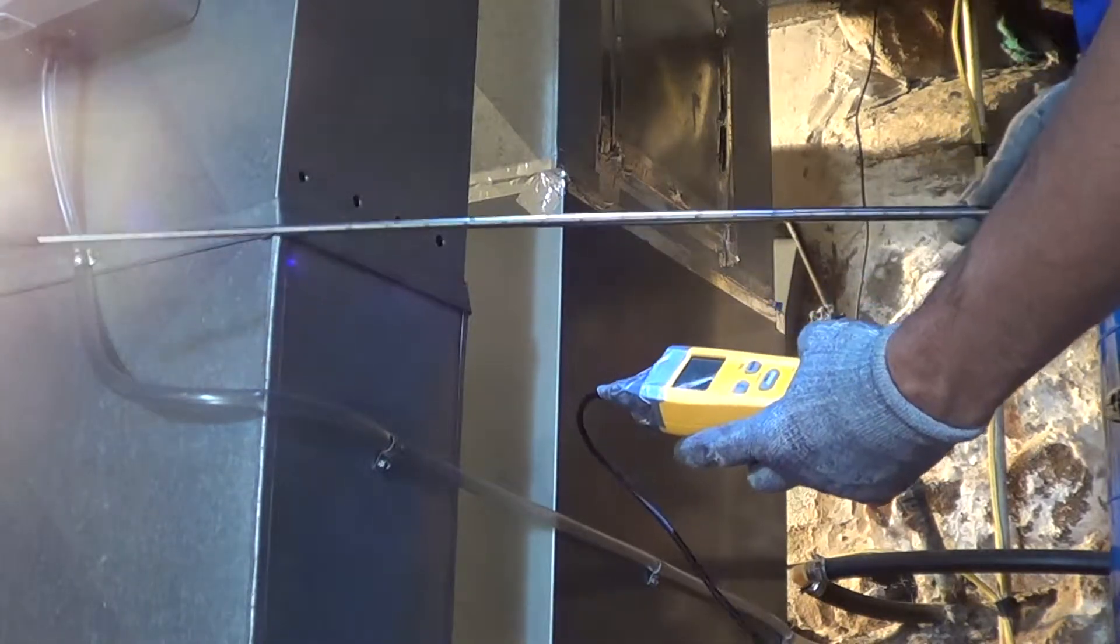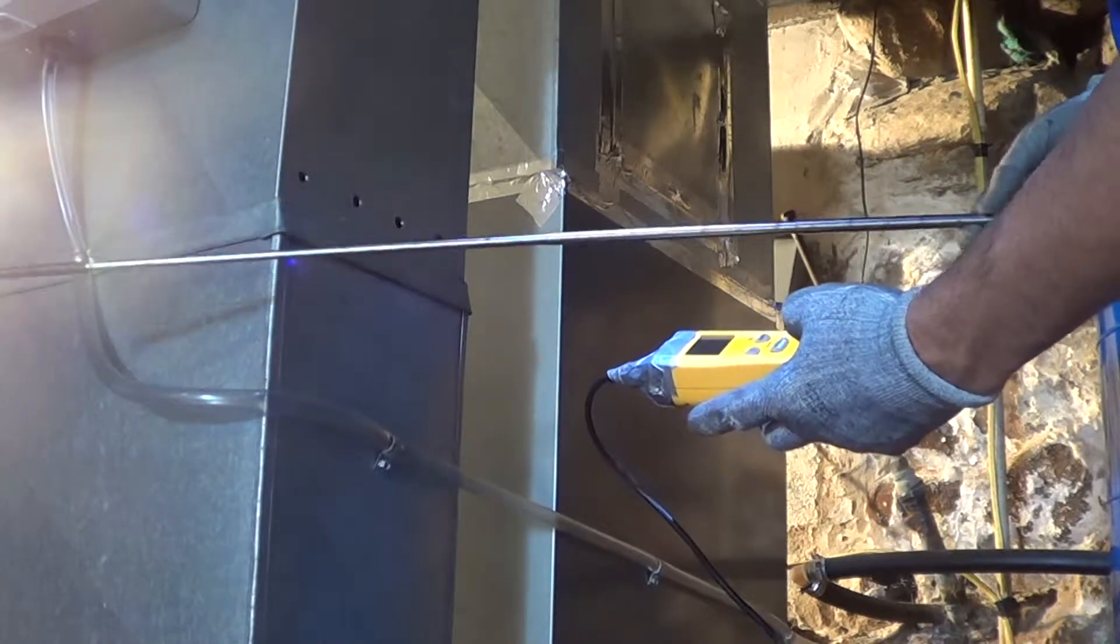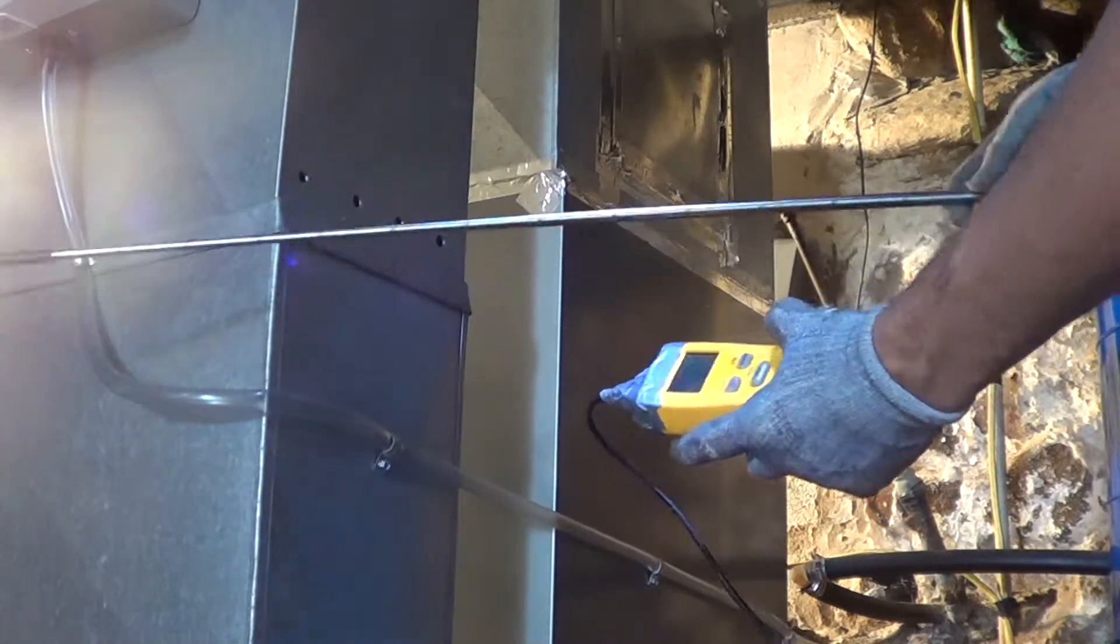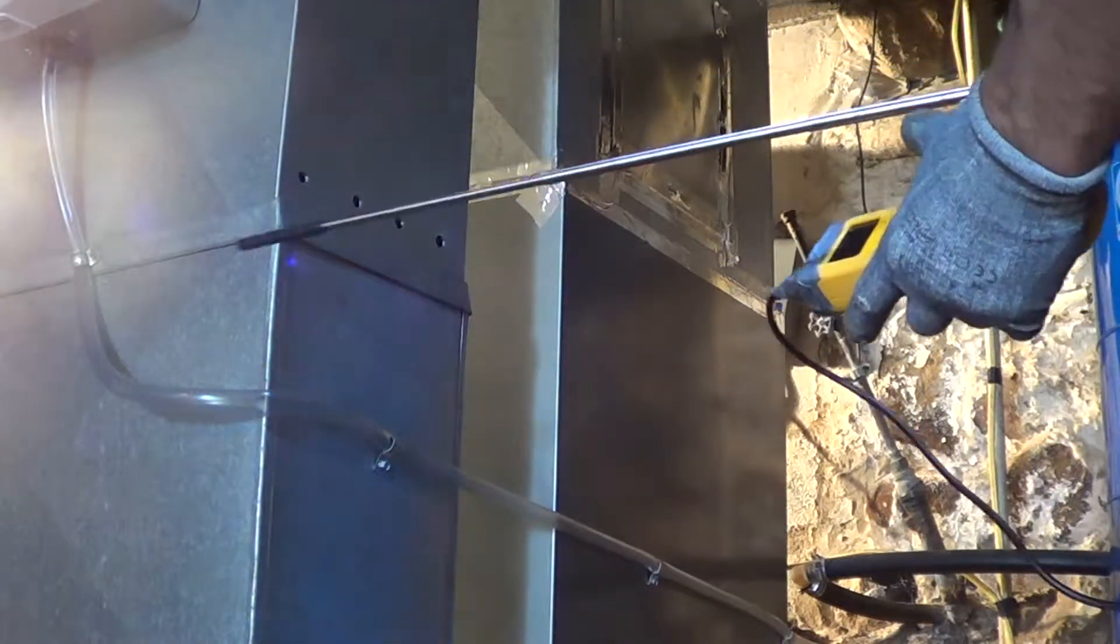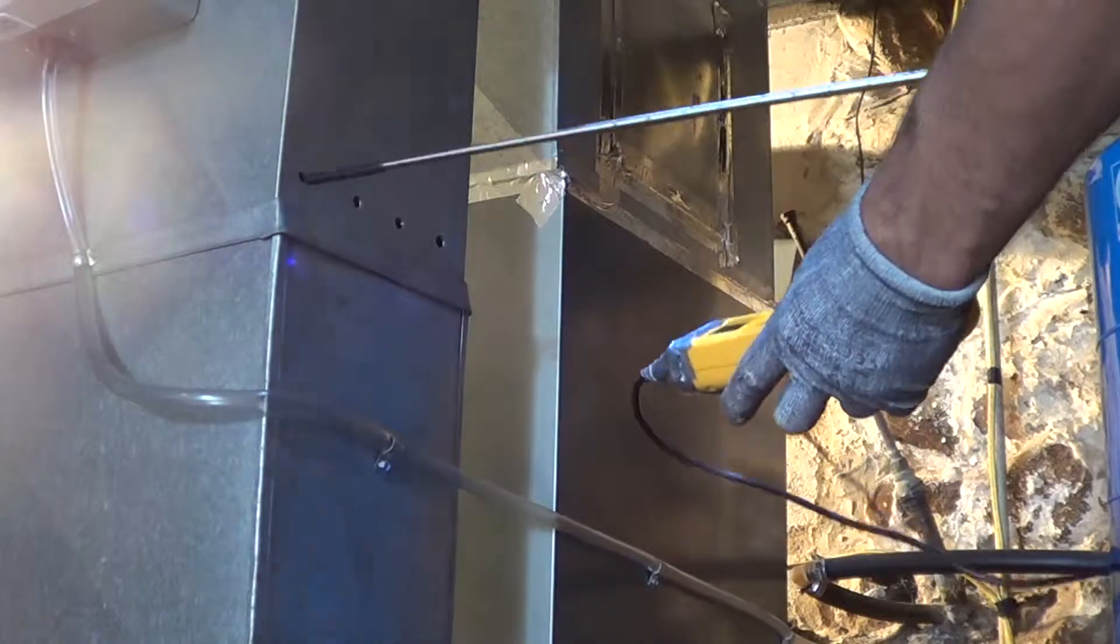So we're going to do a timed average. You can also do a spot average. So I've already entered in the duct size. This one here is going down, so I want the flat spot down.